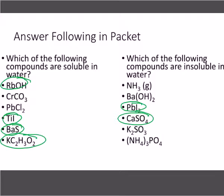Now the second set — identifying insoluble ones. Barium hydroxide: soluble, so you wouldn't circle that. Lead(II) iodide: insoluble — circled. Calcium sulfate: insoluble. Potassium sulfite: sulfite's not listed, but potassium is group 1 — all group 1 salts are soluble. Ammonium phosphate: has ammonium — soluble. The first one, NH3 — that's ammonia, not ammonium. It's also a gas. Think about soda — a gas mixed with a liquid doesn't stay mixed. Gases under pressure can be forced into solutions, but when you take that pressure away, they no longer stay in. So if you see a gas, it's going to be insoluble.